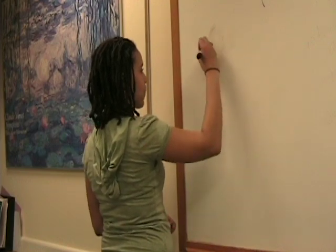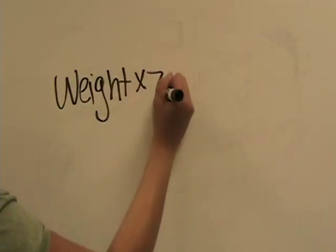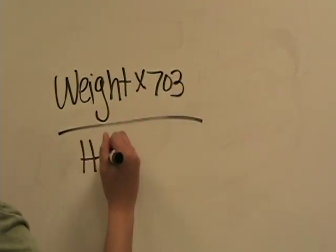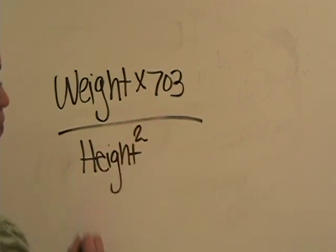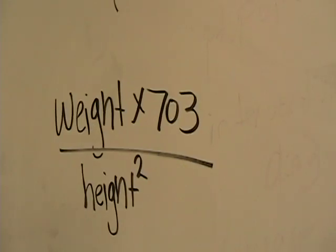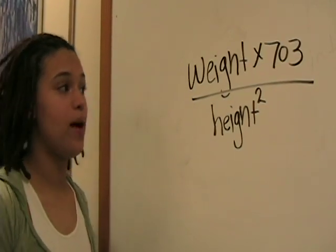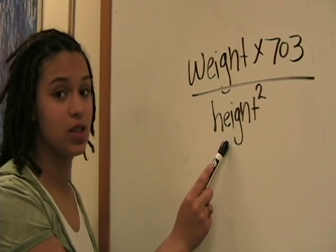If you'd like to try calculating your BMI on your own, just follow this simple formula: your weight in pounds times 703 divided by your height squared. For example, my weight is 130 pounds and my height is 66 inches.